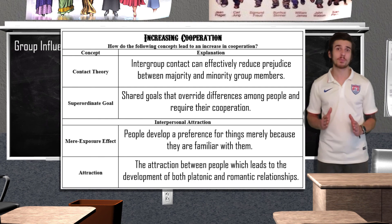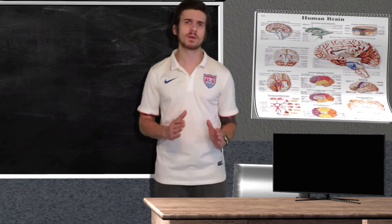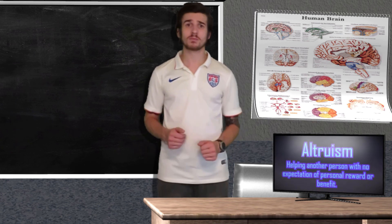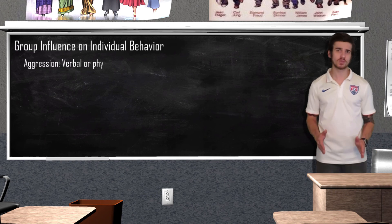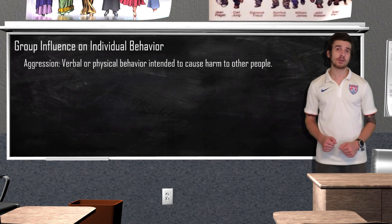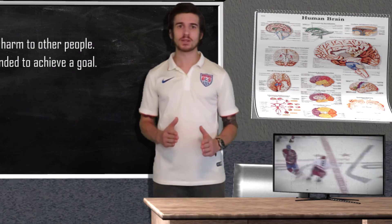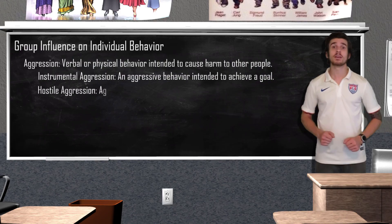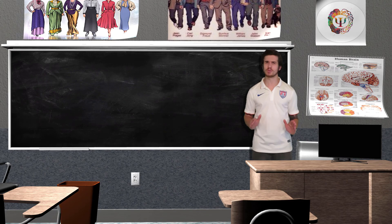Attraction also plays a role in increasing cooperation and forming friendships. Now onto our final topic: a quick discussion on altruism and aggression. Altruism refers to helping another person with no expectation of personal reward or benefit — for example, pulling over on the side of the road to help a stranger change their tire. Aggression refers to verbal or physical behavior intended to cause harm to other people. Aggression can be categorized into two forms: instrumental aggression refers to aggressive behavior intended to achieve a goal, such as a hockey player delivering a hip check to stop a breakaway. Hostile aggression is a type of aggression committed in response to a perceived threat — a very good modern example is road rage.